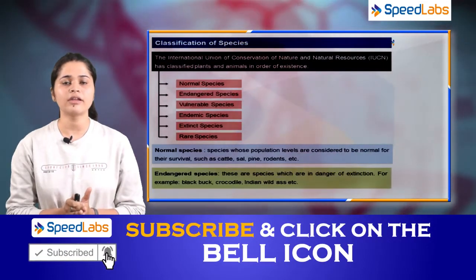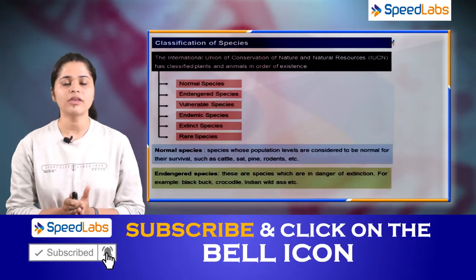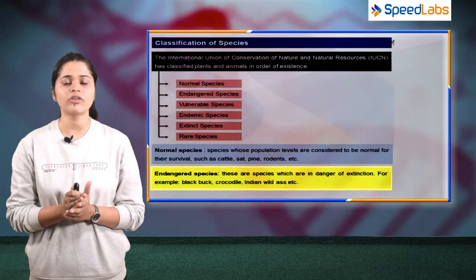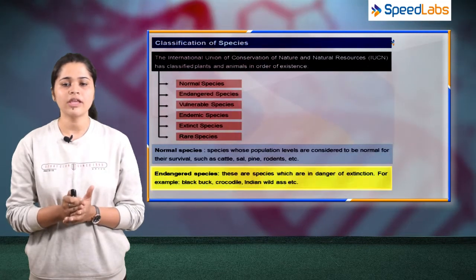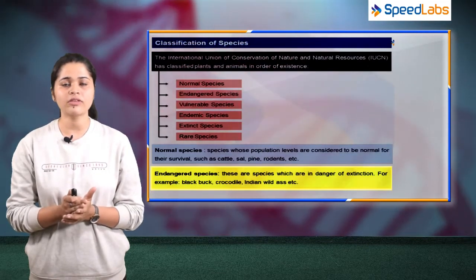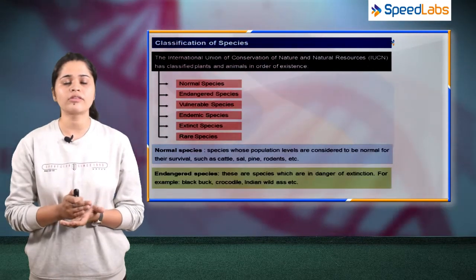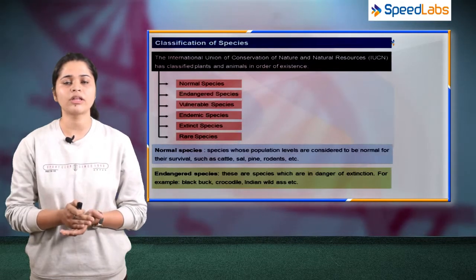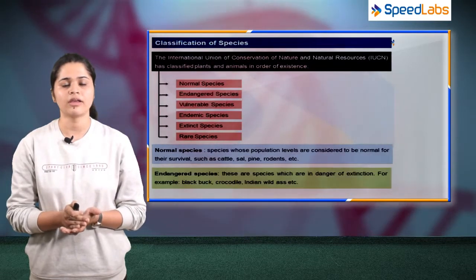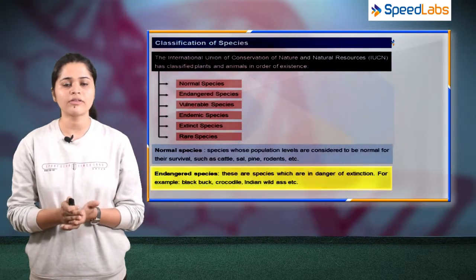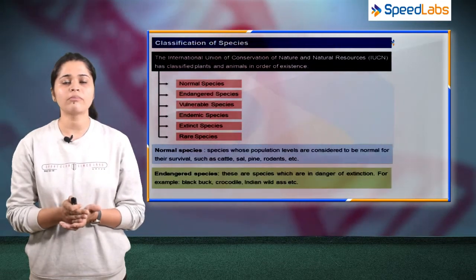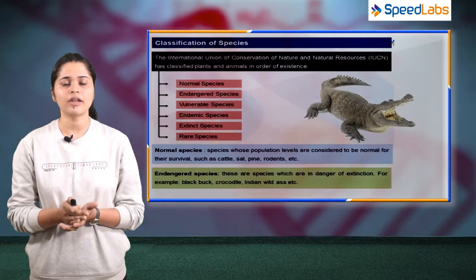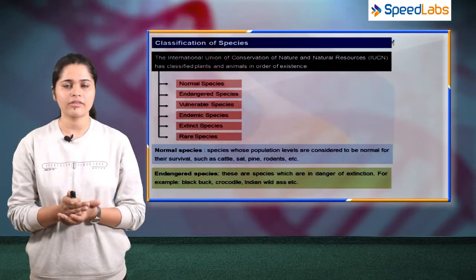The second is endangered species. These are the species which are in danger of extinction — they will end up very quickly. Examples include black buck, crocodile, and Indian wild ass.